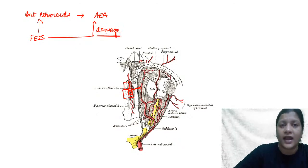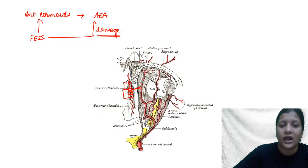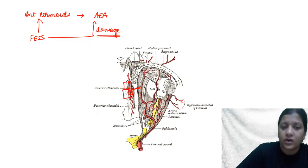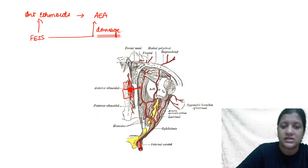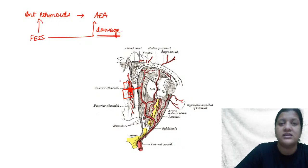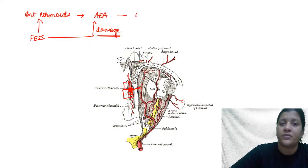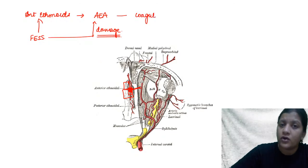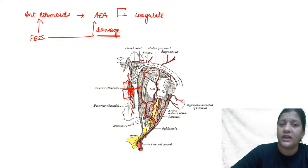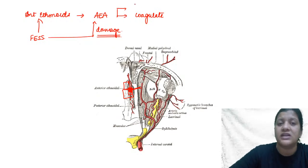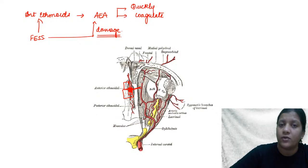When you are doing a functional endoscopic sinus surgery and opening up the anterior ethmoids, there is a high likelihood you may damage the anterior ethmoidal artery. If you can coagulate the bleeding in the nasal cavity or within the anterior ethmoidal sinus, that is ideal — but if you cannot coagulate it and it continues to bleed, it will quickly retract into the orbit.